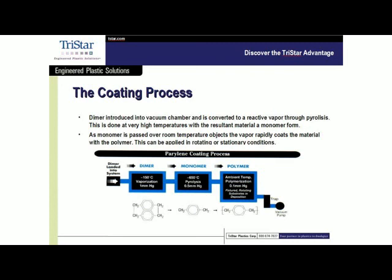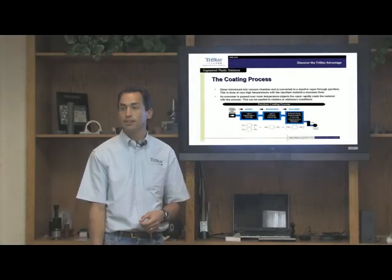It goes from the vaporizer into the pyrolysis zone. The vaporizer is typically about 200°C. The pyrolysis zone is at 700°C in general. When the vapor hits the pyrolysis zone, it cracks the dimer, then it becomes activated and begins to polymerize into the plastic that is known as the perylene plastic.